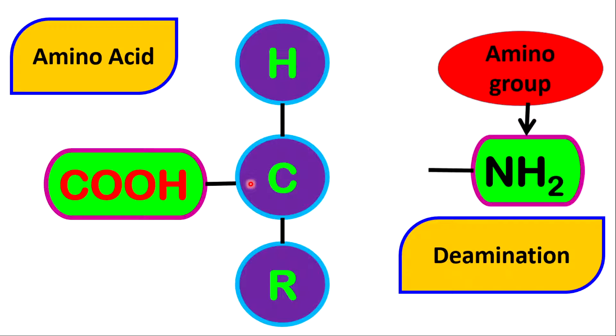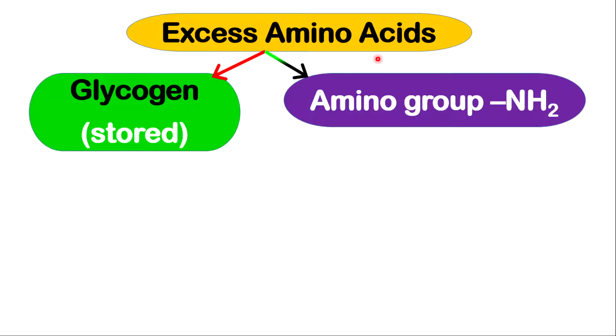The remaining portion of the amino acid will be used to make energy. When there is an excess amount of amino acids within the body, the amino acids will be broken down into two parts: one part will be the amino group, and the other part will be used to make energy — but first, that part is converted to carbohydrate in the form of glycogen.